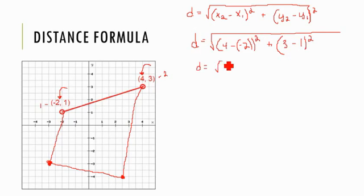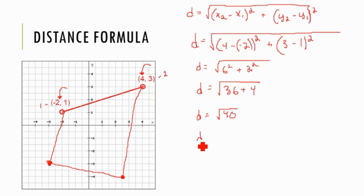So, d equals the square root of 6 squared plus 2 squared. So, d equals the square root of 36 plus 4. So, d equals the square root of 40 and I can break that down into 4 times 10. Take the square root of 4 bring that out of the radical so I have 2 square root 10.